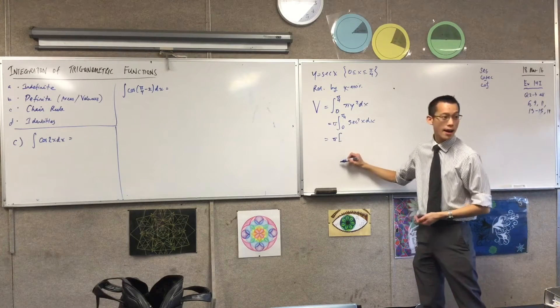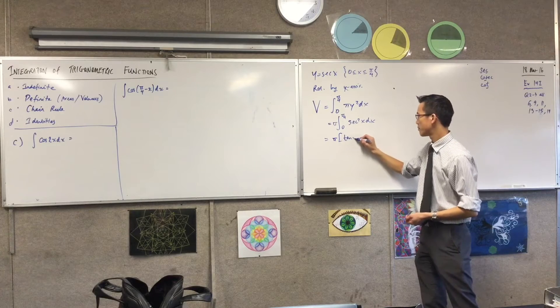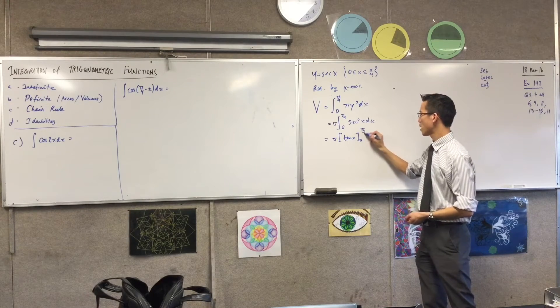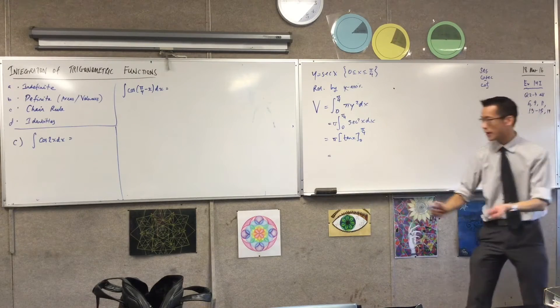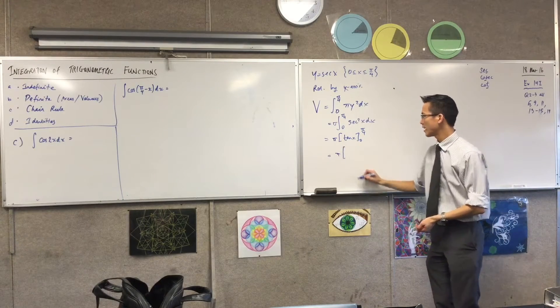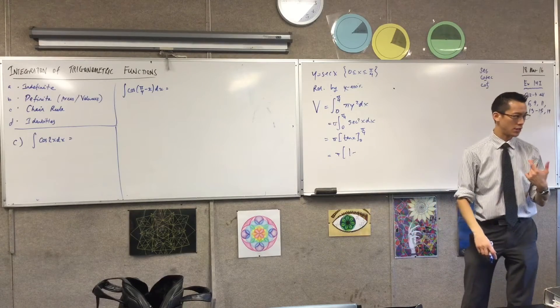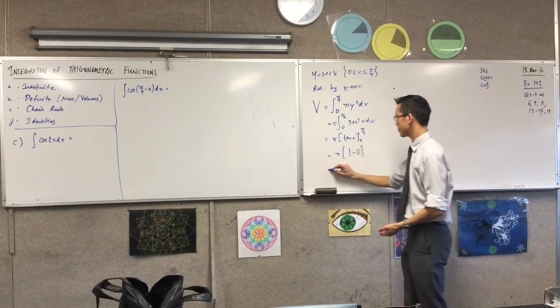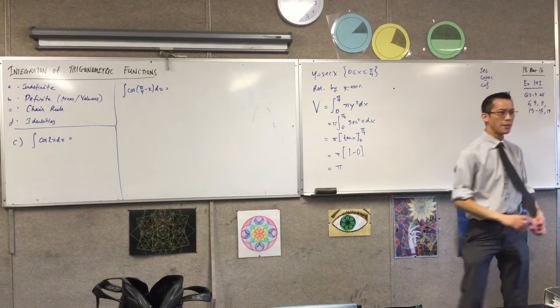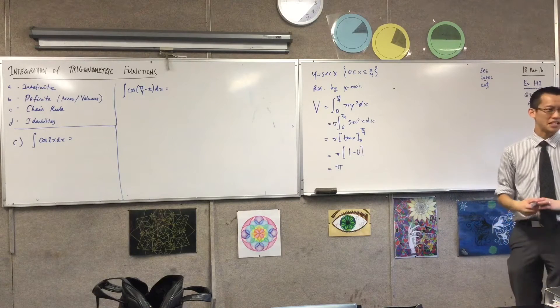This is pi times tan x from 0 to pi on 4. And now I'm just going to evaluate. I'm getting tan of pi on 4, which is 1, minus tan of 0, which is 0. Okay, that's a bit better. That's not the answer, by the way. That is not the answer.